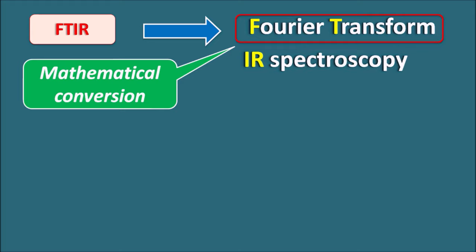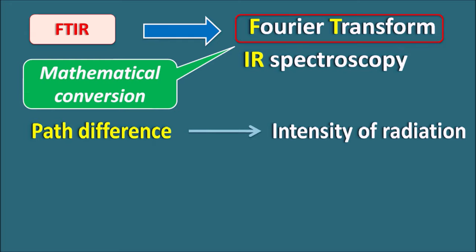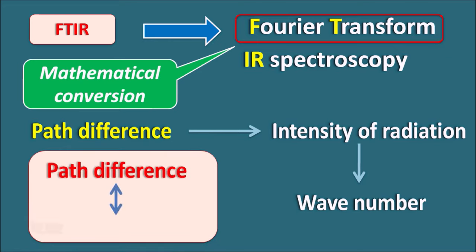The main principle behind FTIR is the production of a path difference between two optical pathways, which results in interference that may be either constructive or destructive. This path difference is directly proportional to the intensity of the radiation passing into the sample, which is then converted into a wave number. In this way, the path difference is related to the wave number of the radiation, making FTIR more accurate and precise compared with dispersive IR spectroscopy.